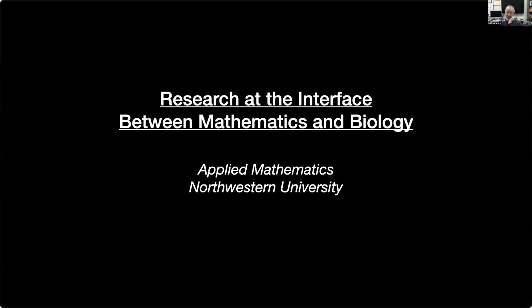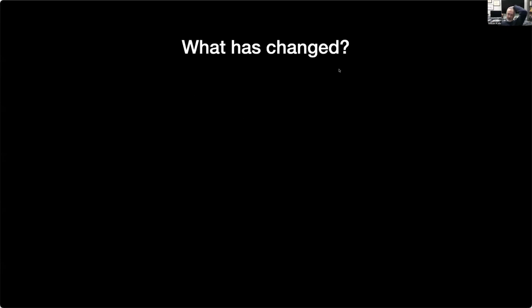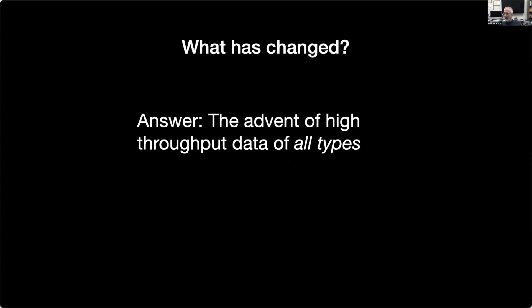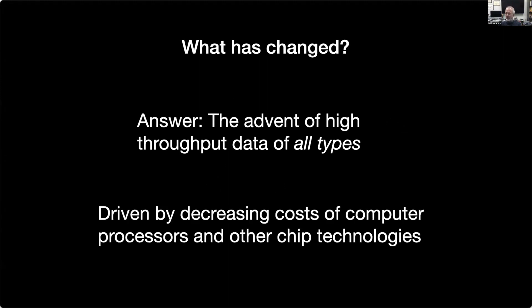I'm going to talk very briefly about research at the interface between mathematics and biology. The question is why is this an opportune time? My view is basically because there's lots and lots of data coming online in the biological area. This has been driven by the fact that every time computers get cheaper, people add automated experimental apparatus to their labs. This is just producing a wealth of information, and people want all kinds of help understanding what this data means.